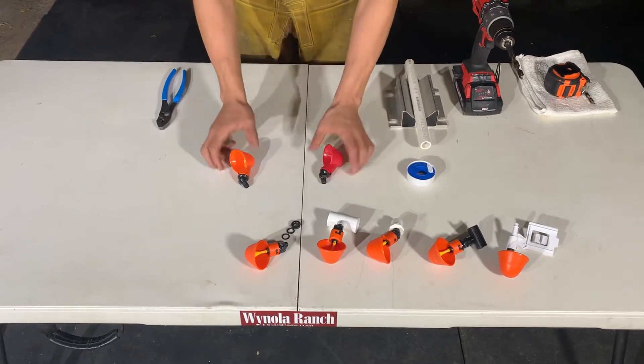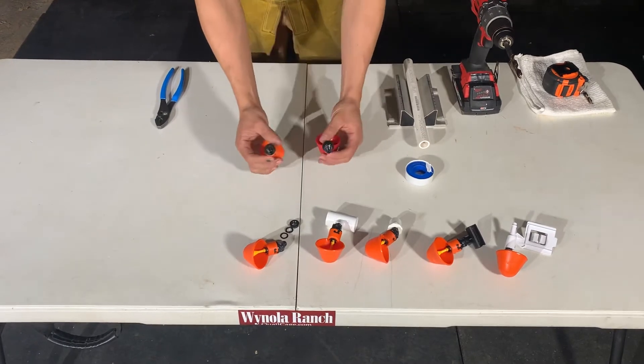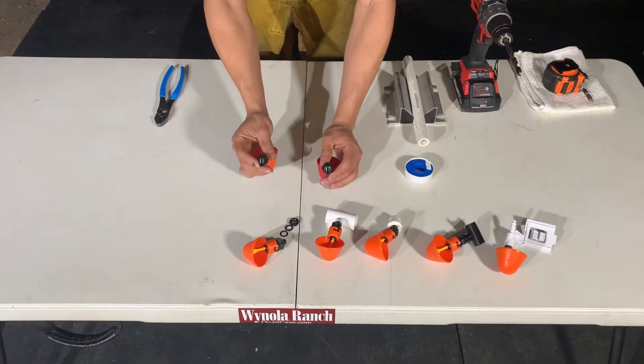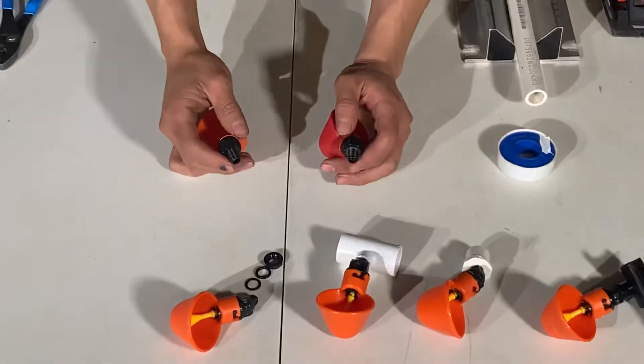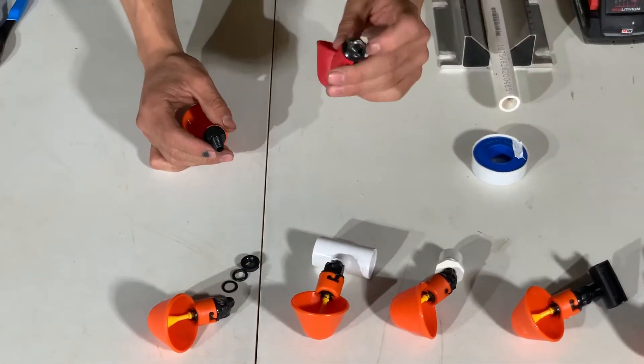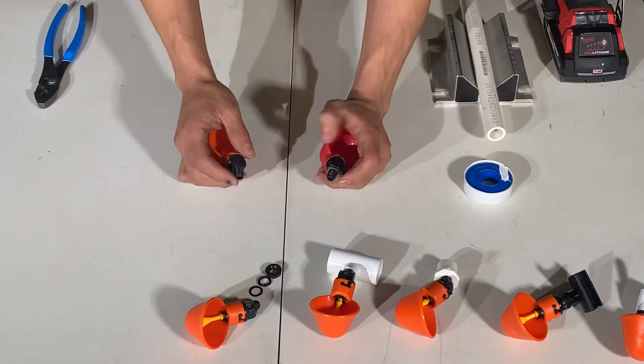So just by looking at it you can see that there's obviously different similarities in the threading. This one has a self-tapping thread. This one doesn't. You would need to use a nut and this flat washer that it comes with to do any type of installation.